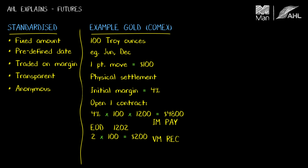If I held the position open to the next day and the value at the end of that day was $1,199, the price would have dropped by three points. So I would have made a loss. The size of that loss would be three points multiplied by the $100 value per point, which would be $300. This would be variation margin which I would have to post to the account.